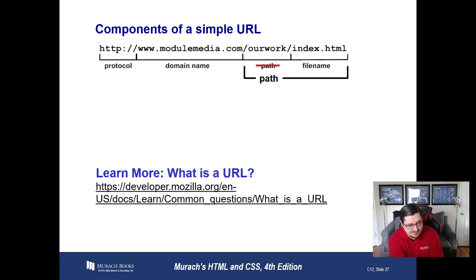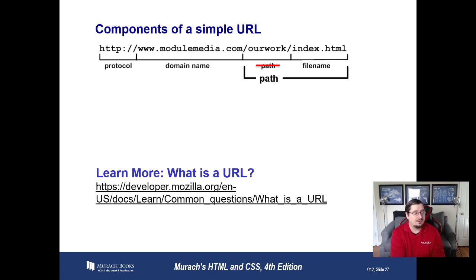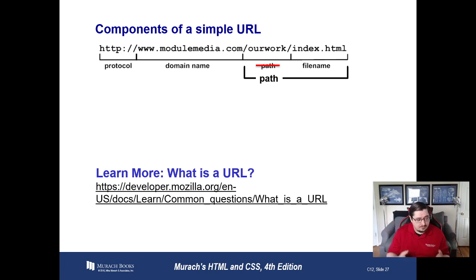Your browser doesn't know the IP addresses of all servers on the internet. What it knows is the domain name you typed. It goes to the DNS server provided by, say, Google, or your internet service provider like Charter, AT&T, or Verizon, and asks: what IP address is modulemedia.com? The DNS server returns the IP address. If you type a domain name that's not valid, it comes back with a DNS error because it couldn't find a mapping for that name.